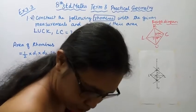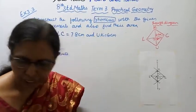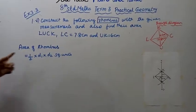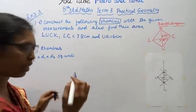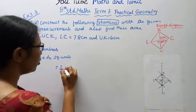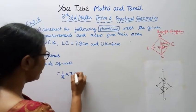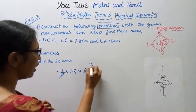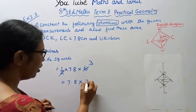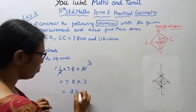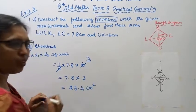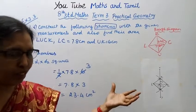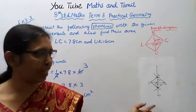Now we have to find the area of the rhombus. Area of rhombus equals half into D1 into D2. Half into D1 is 7.8, D2 is 6. Cancel 2: 3 into 6 is 6. So 7.8 into 3 equals 23.4 square cm.